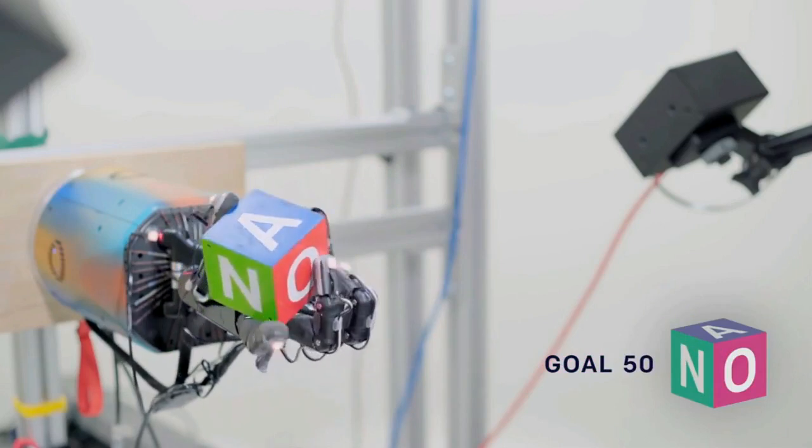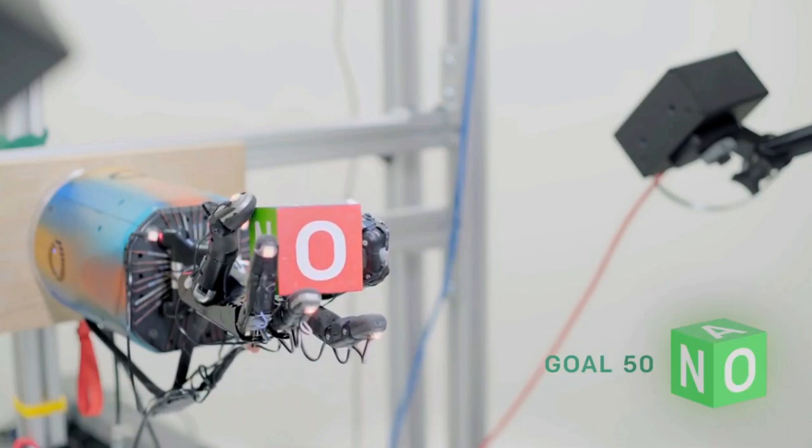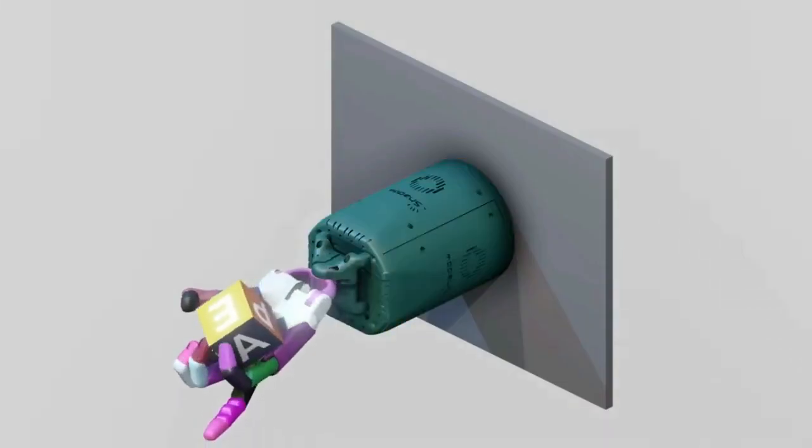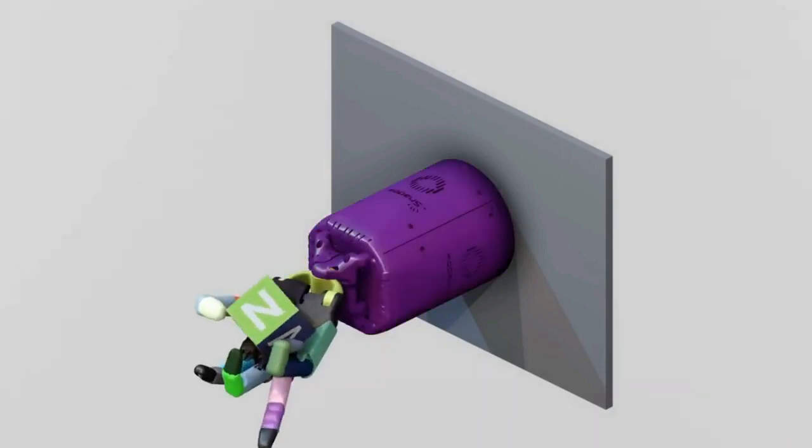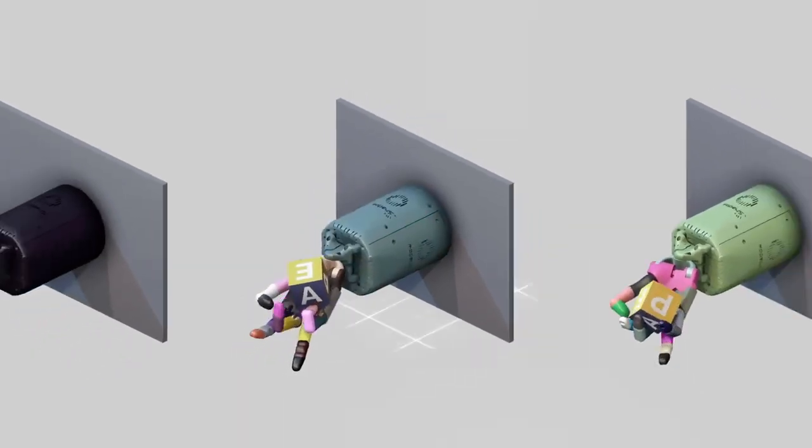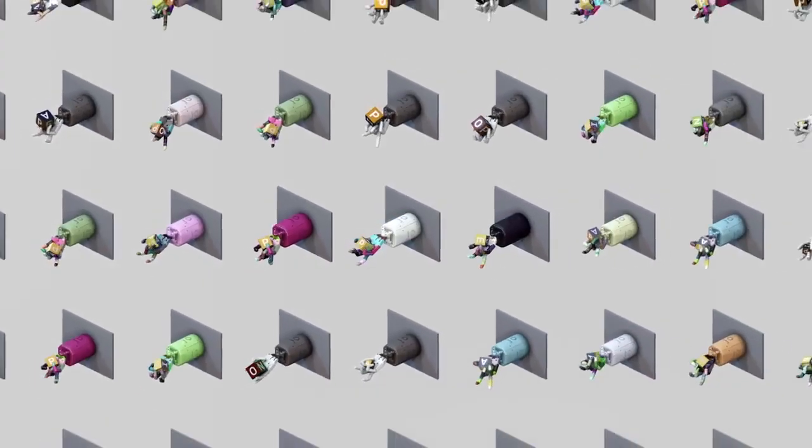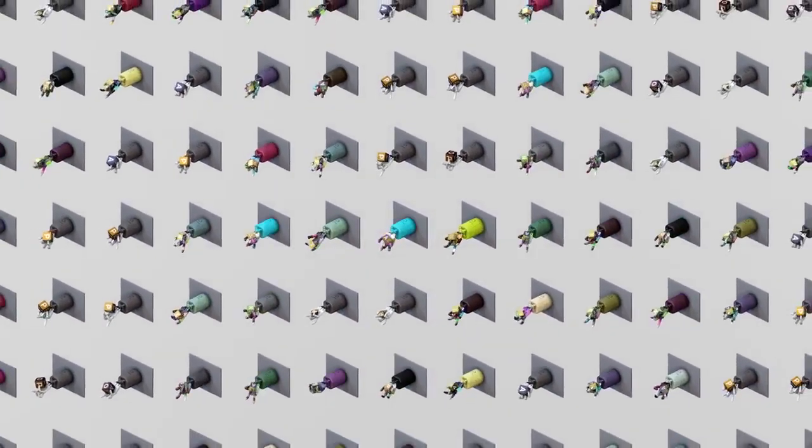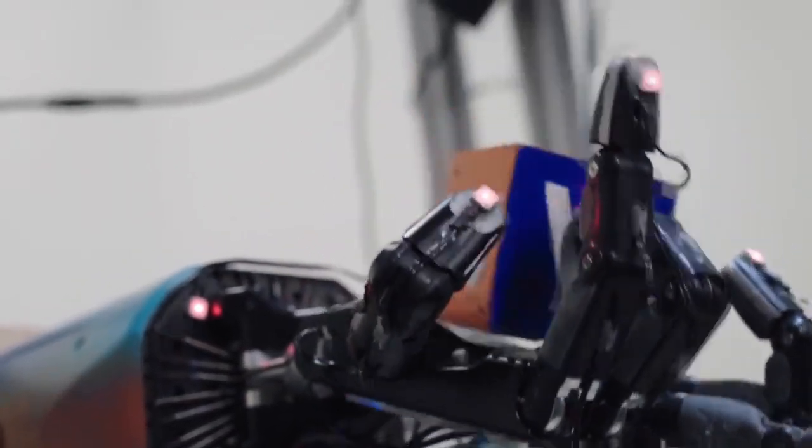Dactyl is a system for manipulating objects using a Shadow Dexterous Hand. The researchers place an object such as a block or a prism in the palm of the hand and ask Dactyl to reposition it into a different orientation. For example, rotating the block to put a new face on top. The network observes only the coordinates of the fingertips and the images from three regular RGB cameras.